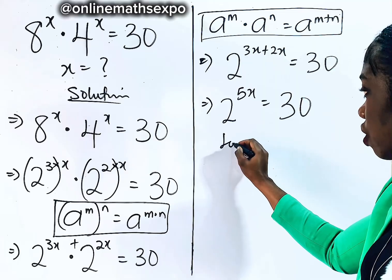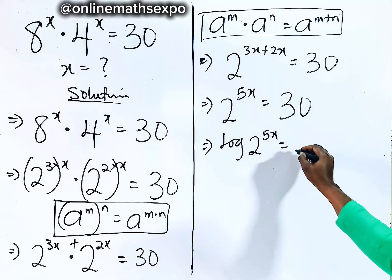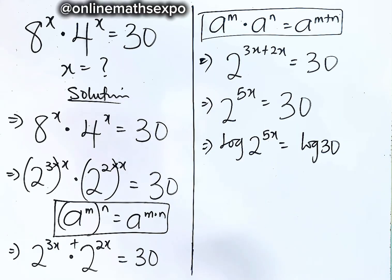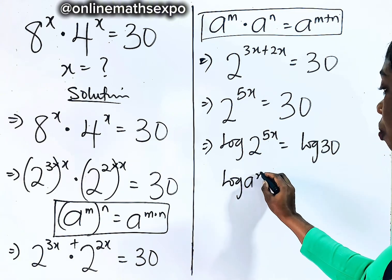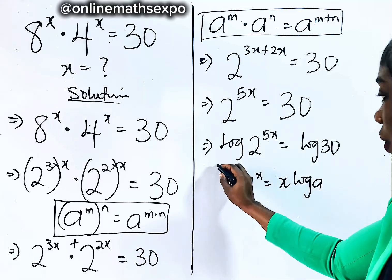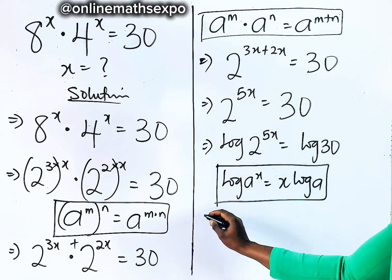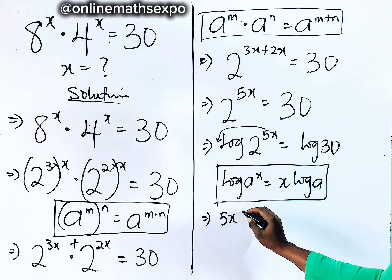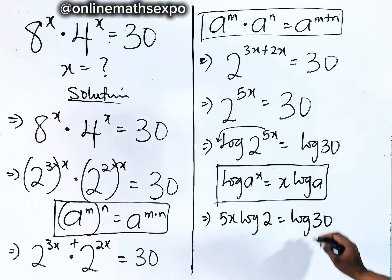Now take the log of both sides. So we have log of 2 to the power of 5x is equal to log of 30. Remember: for every log of a to the power of x, it is x times log a. So applying this rule on the left side, this power comes down and multiplies the log, giving us 5x log 2 is equal to log of 30.